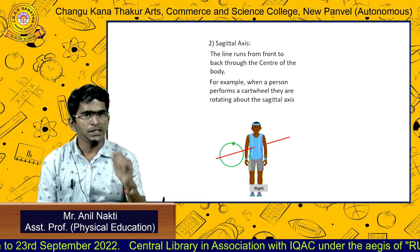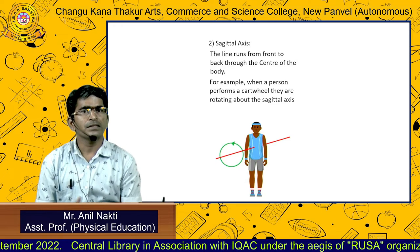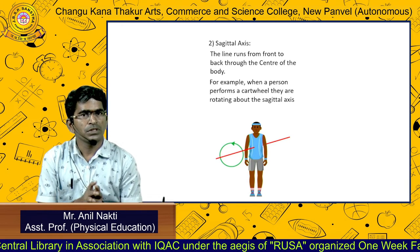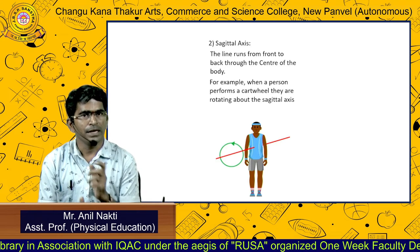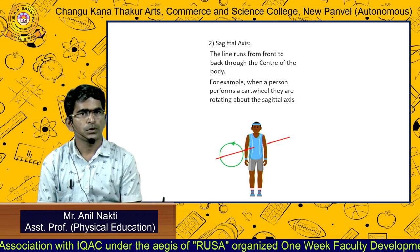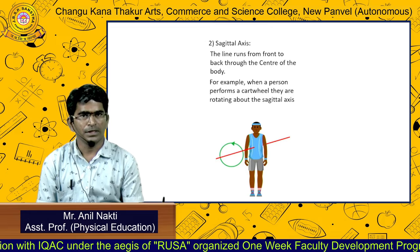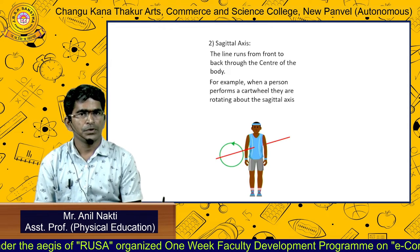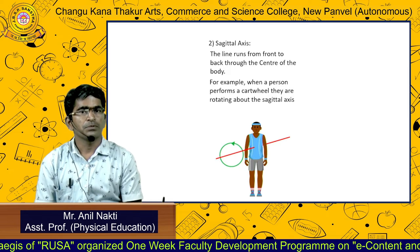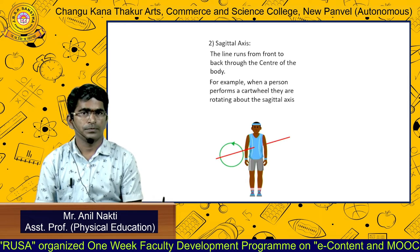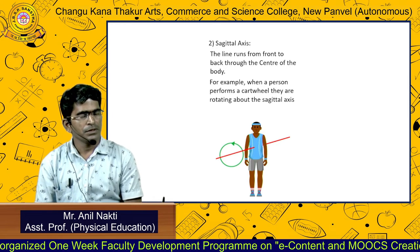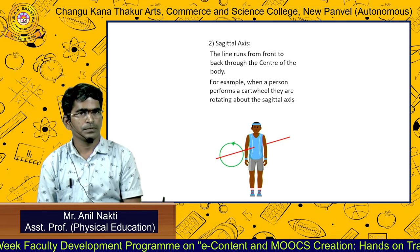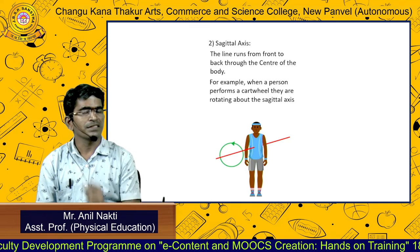The next one is the sagittal axis. The line runs from front to back through the center of the body. For example, when a person performs a cartwheel, they rotate their body around the sagittal axis.